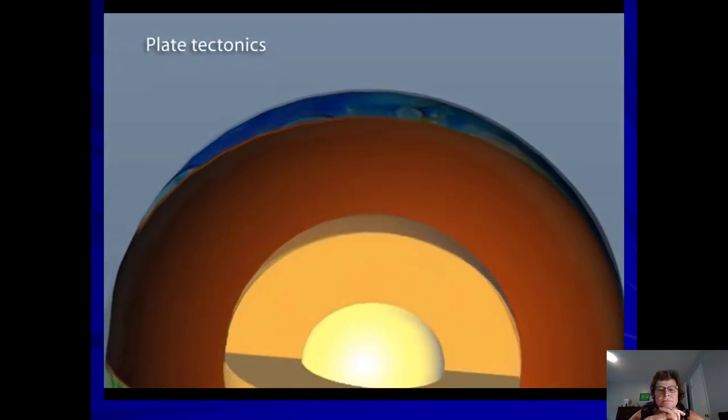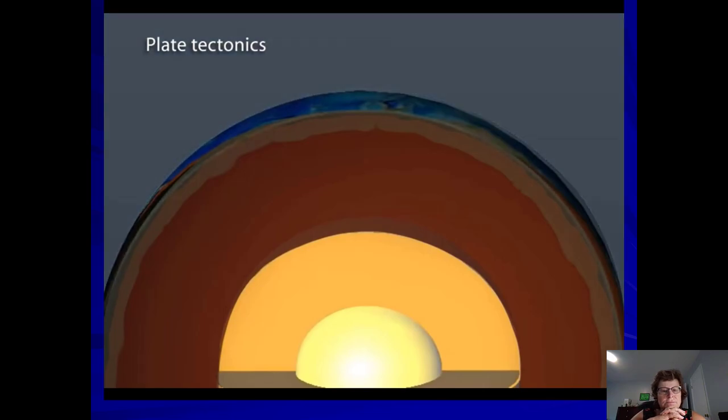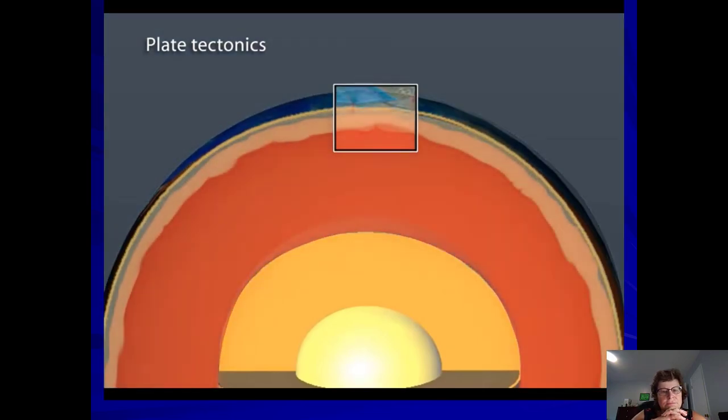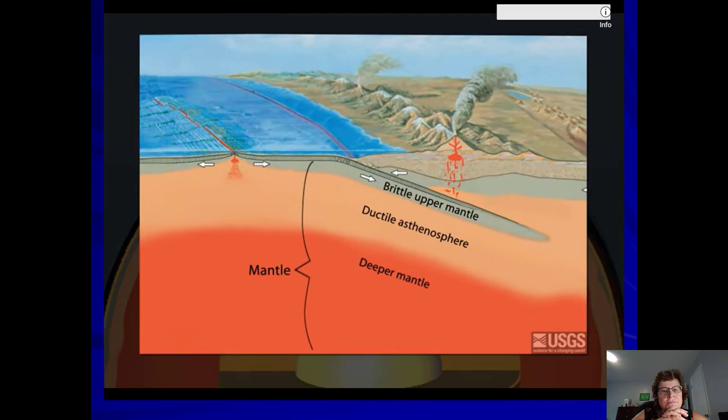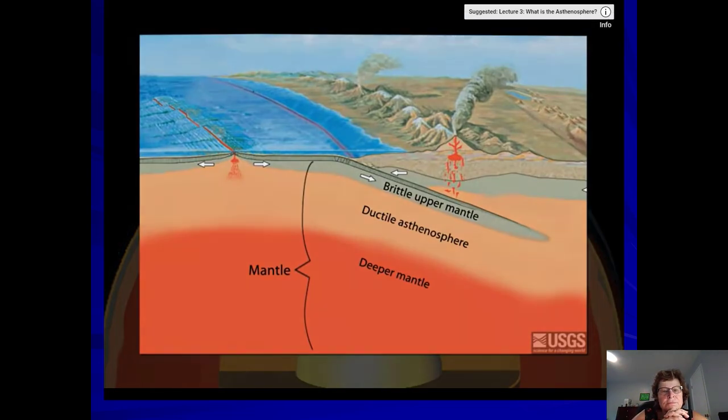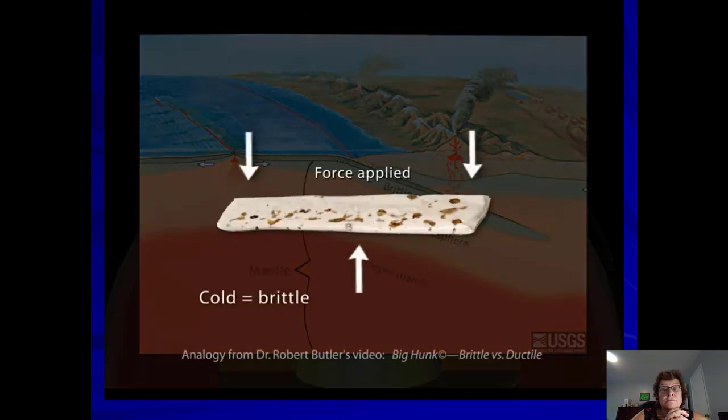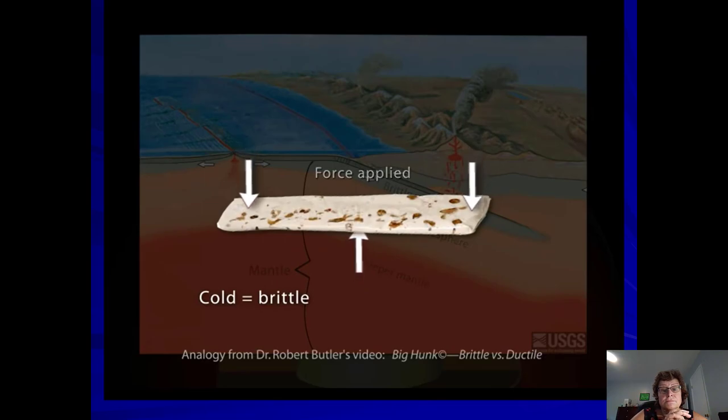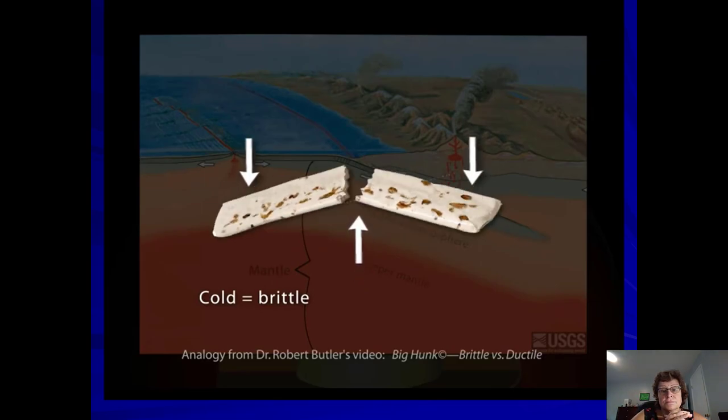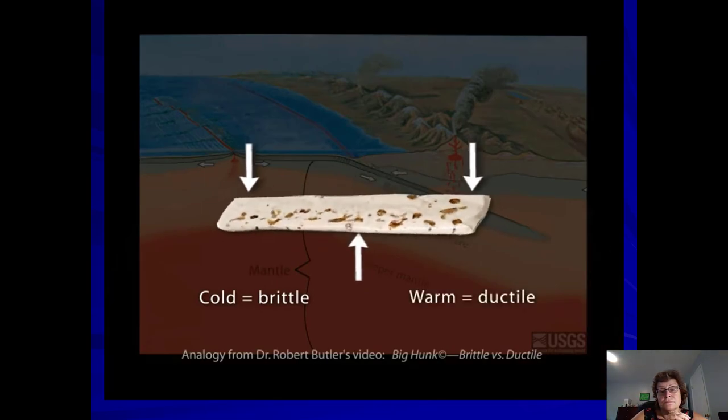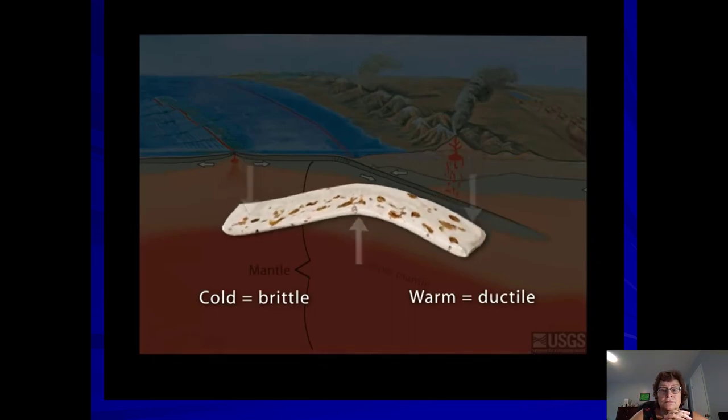But back to plate tectonics. As you recall, the cool uppermost part of the mantle is brittle. How can the top of the mantle be brittle when the same material in the asthenosphere is ductile? A Big Hunk candy bar can be used as an analogy. Like the uppermost cool mantle, when the Big Hunk is cold, it is brittle and breaks when bent. When you heat it up, it becomes ductile or plastic and can bend and flow.